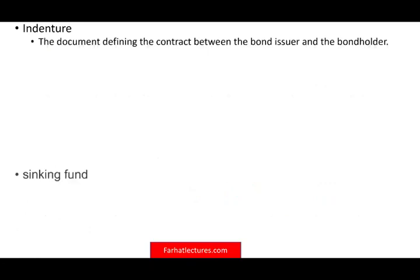Let's look at additional terms relevant to bond ratings. An indenture is a contract between the bondholder and the issuer. It spells out the specific conditions between the bondholder and the lender, because things will happen — sometimes you have two bondholders, and you need to know who gets paid first.